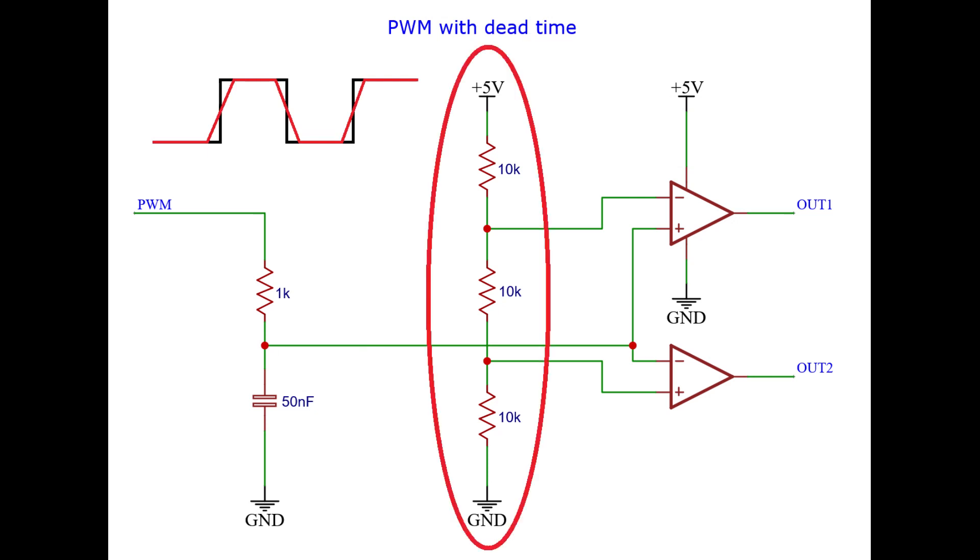Then there is the resistor divider in the center of the circuit. It creates two voltages which are compared against the slowed down version of the input signal. When the input signal is below 1.6 volts, the output 1 signal is low and the output 2 signal is high.